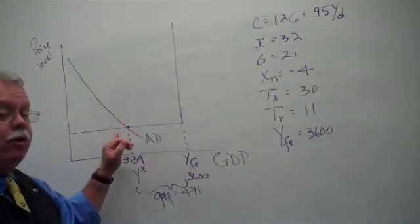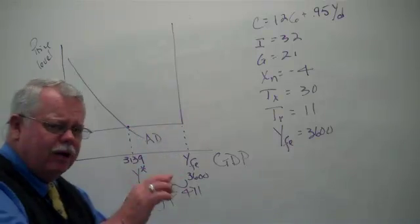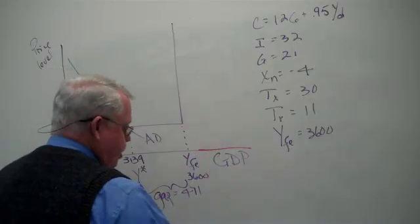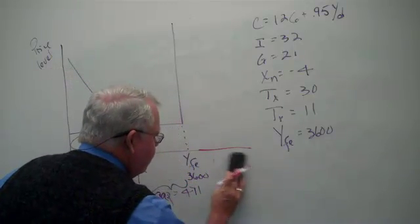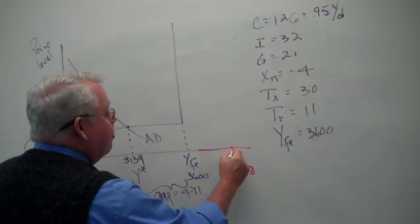Redrawn the graph showing the equilibrium and the gap, because we're in a recession. Quick illustration, if we had calculated our equilibrium and it had come up out here. Let's say the number came up as 3900, and that was our equilibrium.